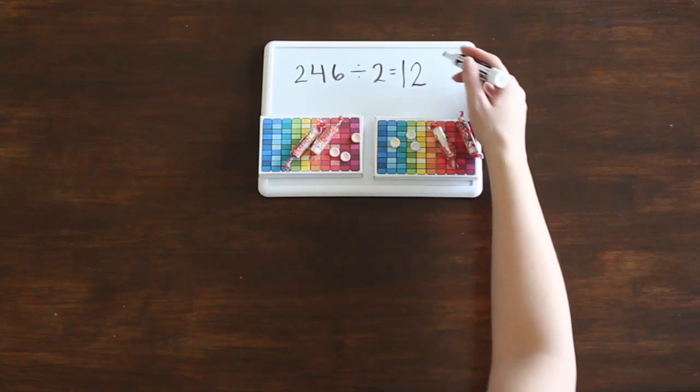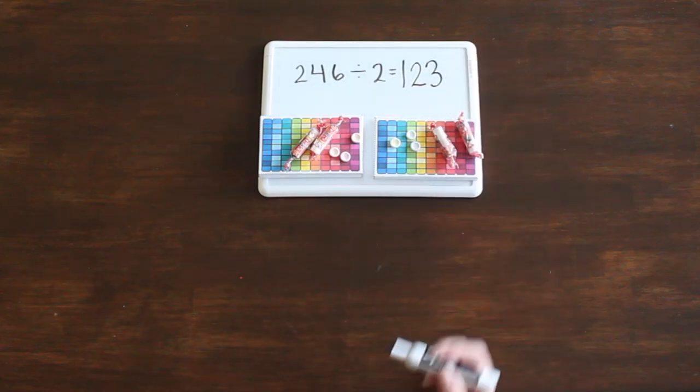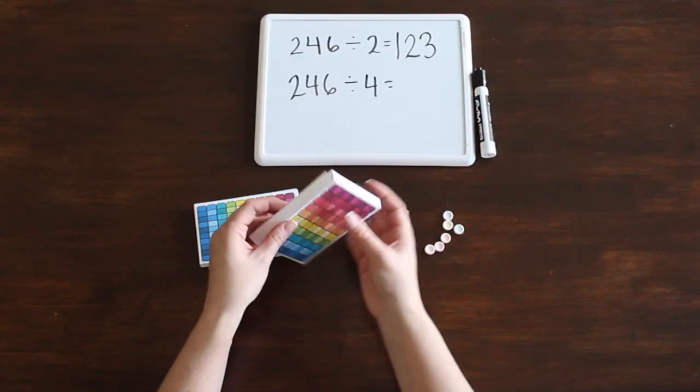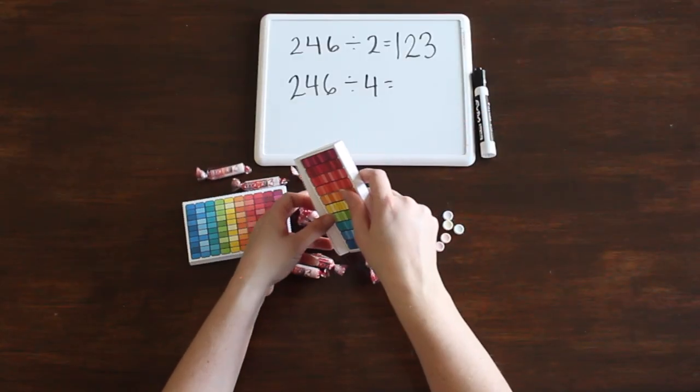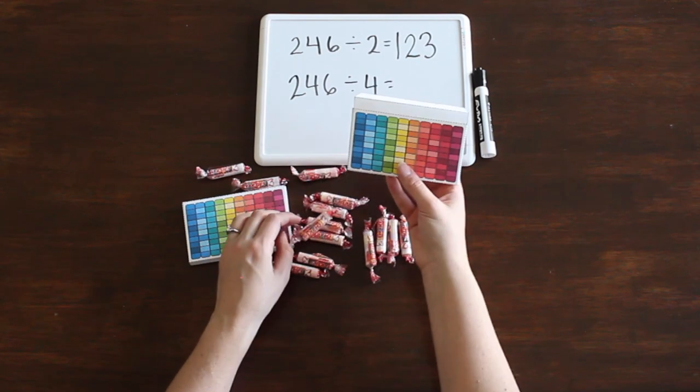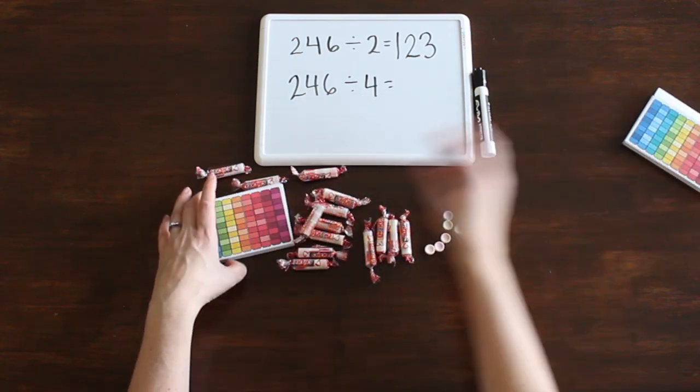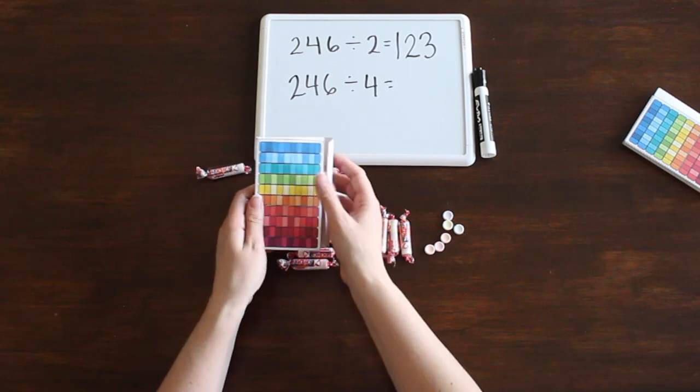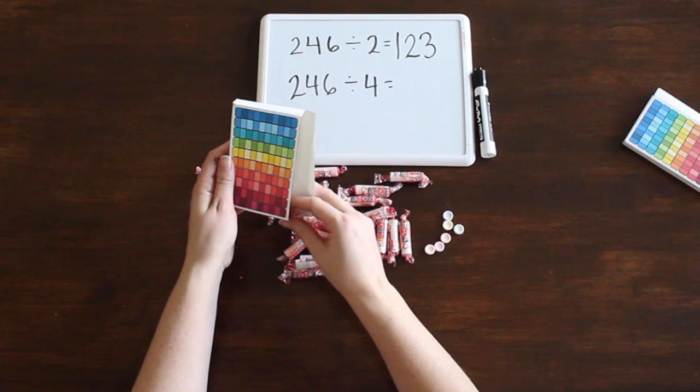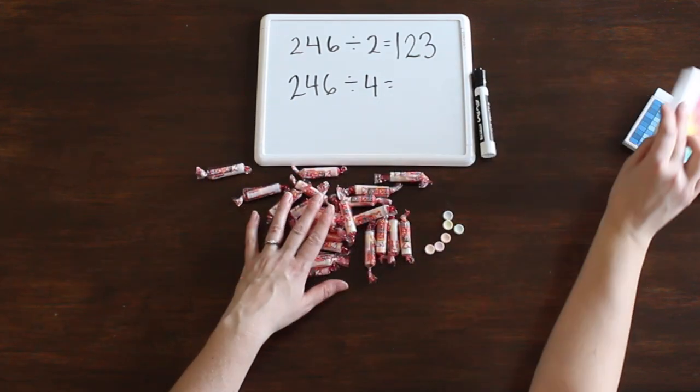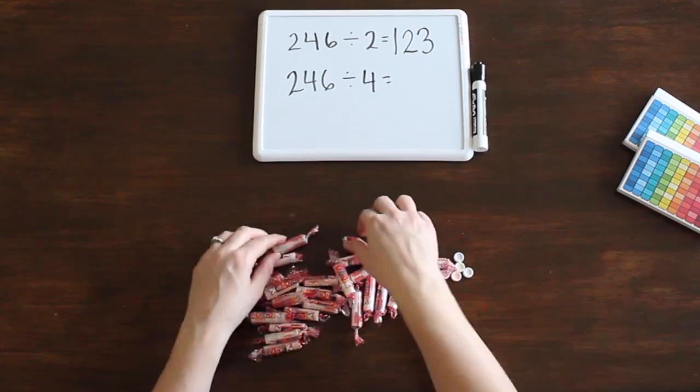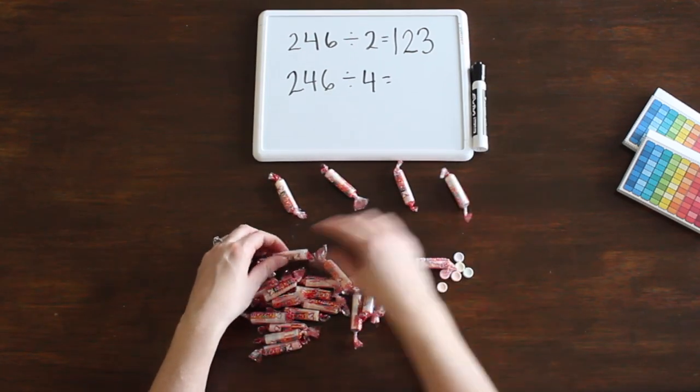Then give the students a different number and say what if we want to share the Smarties with a different number of people. In this example, I'll use the number 4. If we are sharing the Smarties with 4 people, it doesn't come out evenly like it did with 2 people. However, instead of opening everything all up and having a huge pile of individual Smarties, what if we start by just opening the boxes and sharing the rolls? This is like starting with the largest place value when dividing. We will start by seeing if we can divide the hundreds out evenly.